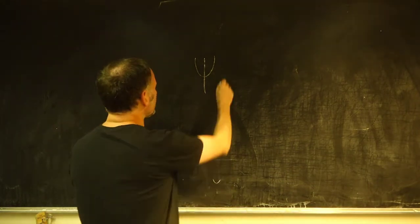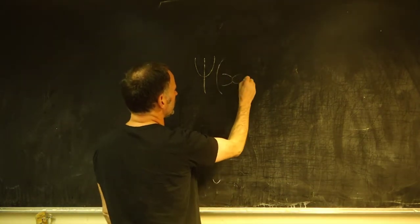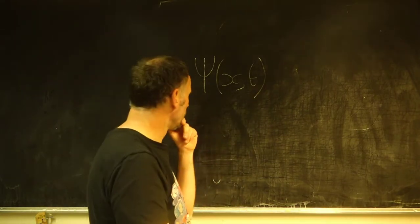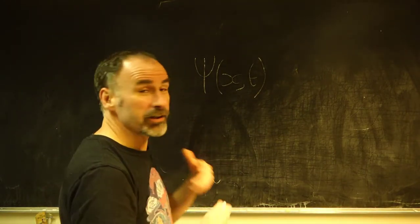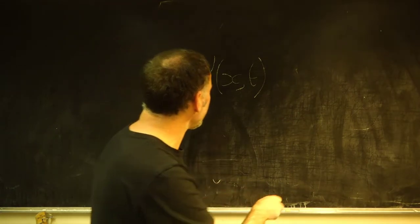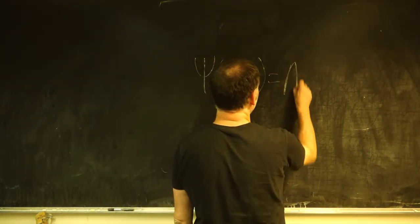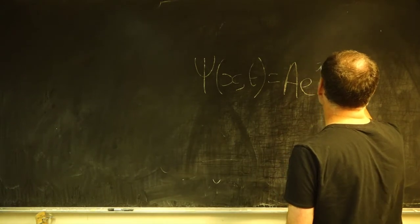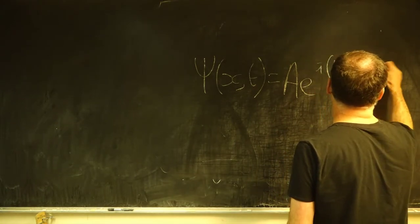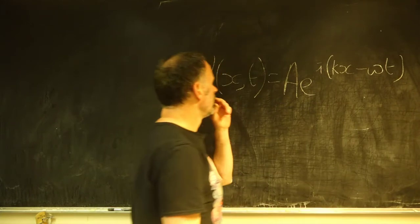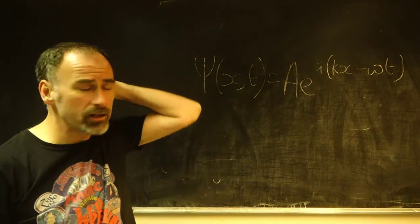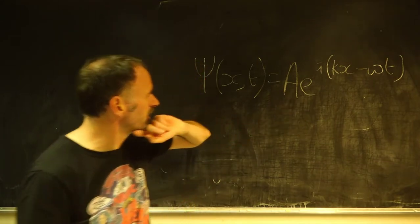And we're going to call that ψ and it's going to be a function of position and of time. I'm only thinking about one dimension. We can extend this, of course, to three dimensions. And let's write it as a plane wave of the type you've seen before many times. Okay, and this is complex valued, so for example, we could embed a phase in this term.